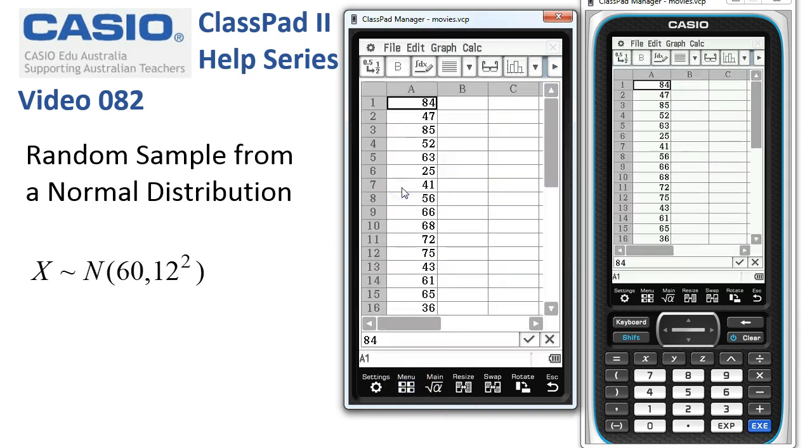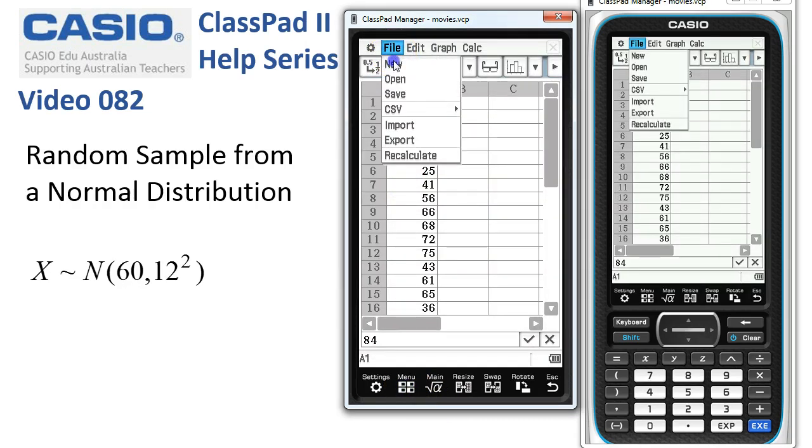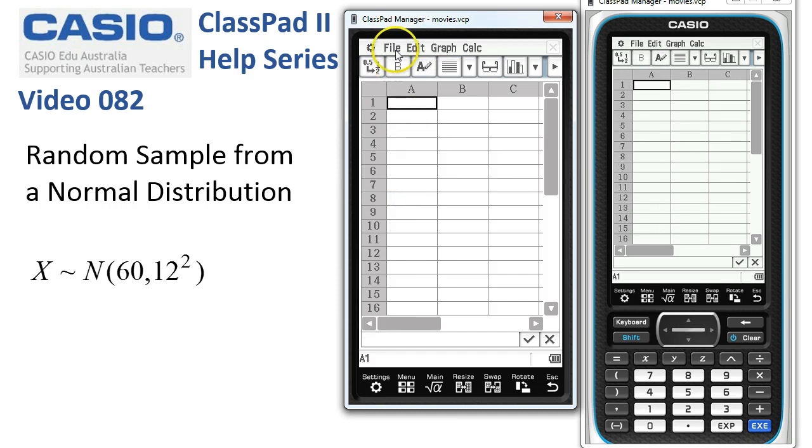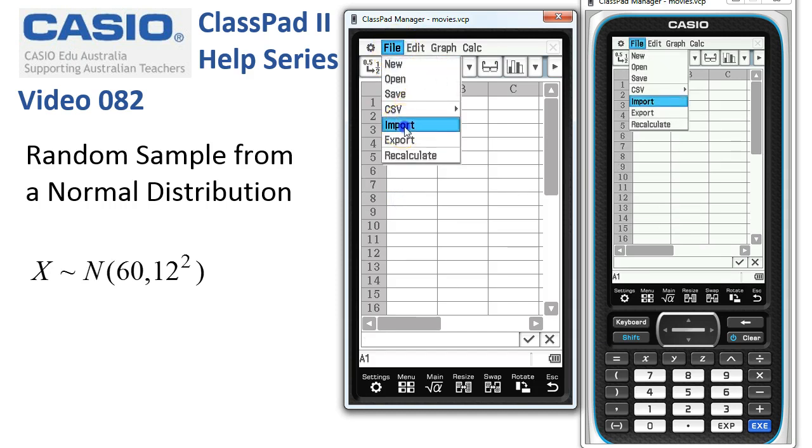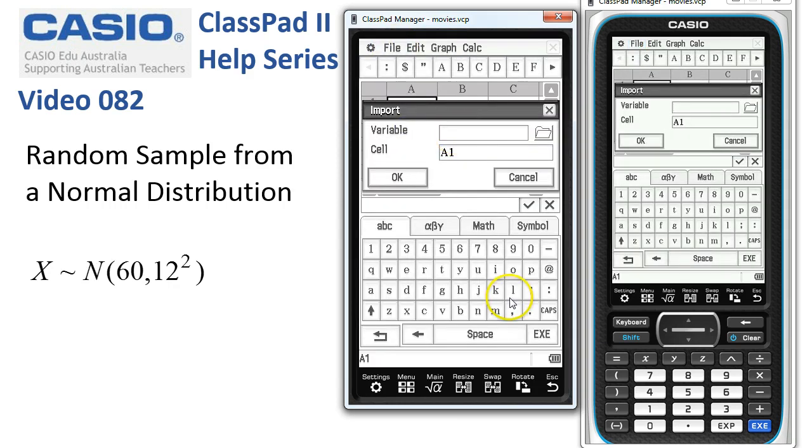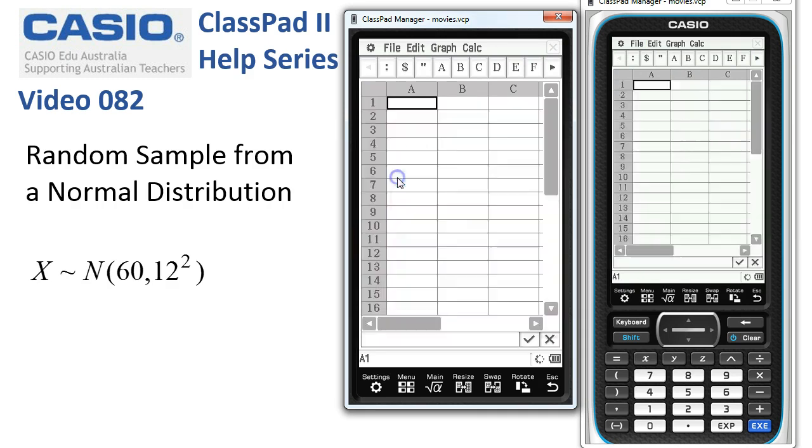I could also have a look at the data in a spreadsheet. If I start a new spreadsheet here and then use File Import, and the variable would be List 1. The List 1 is just the list variable, so List 1, say OK.